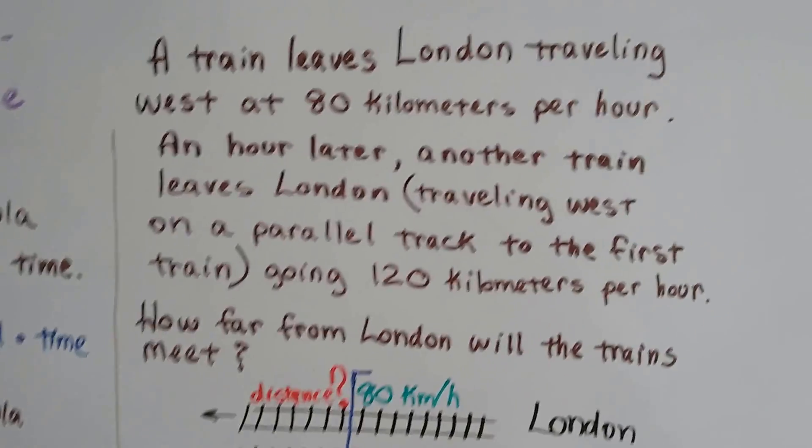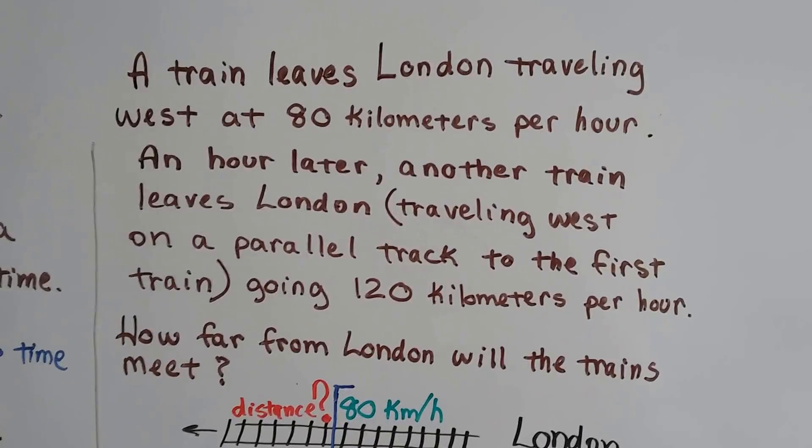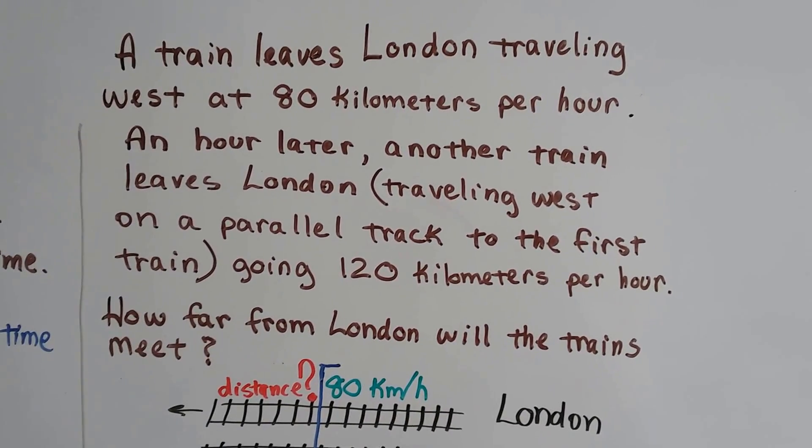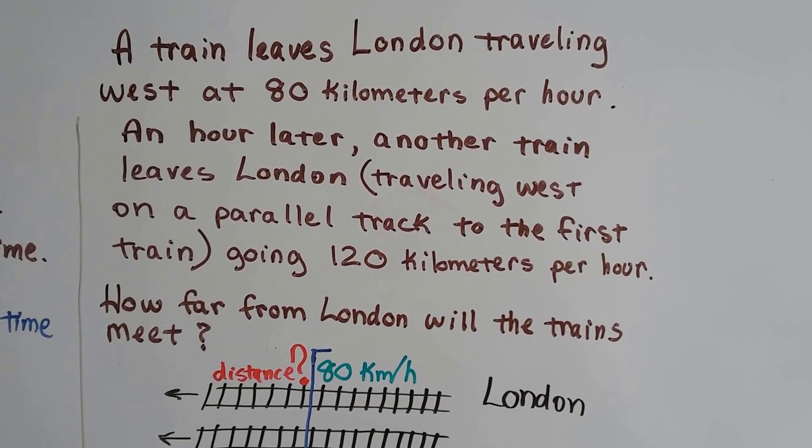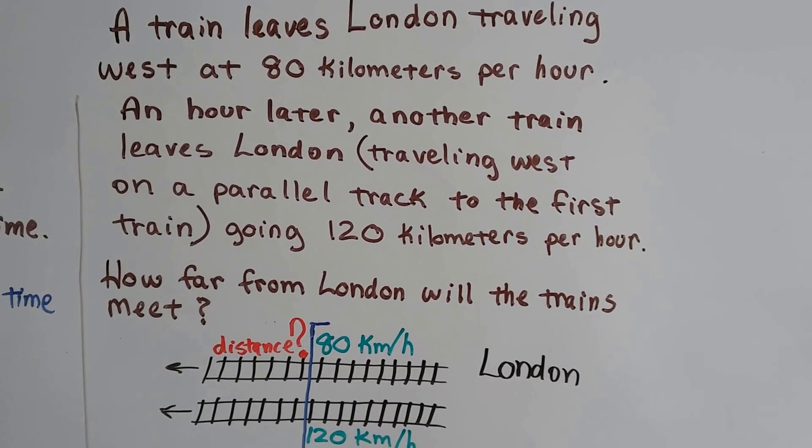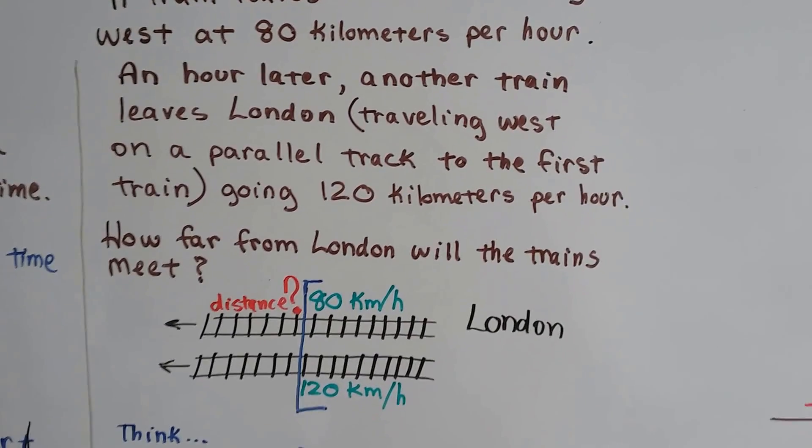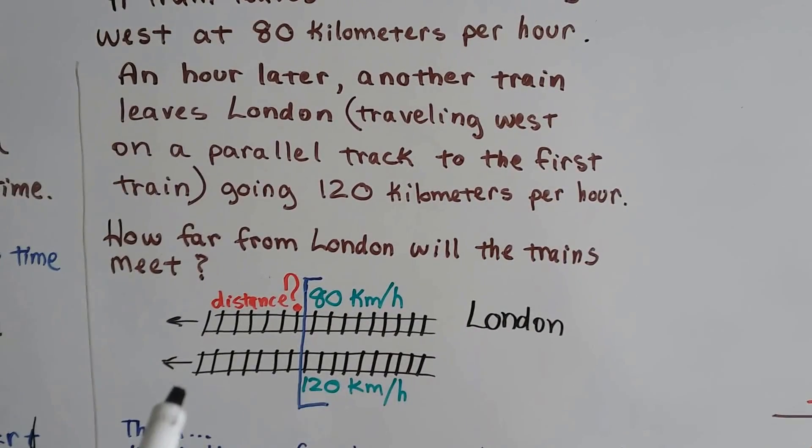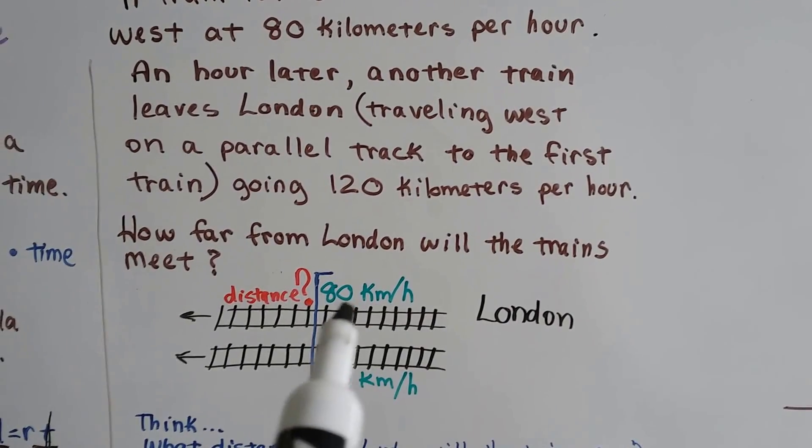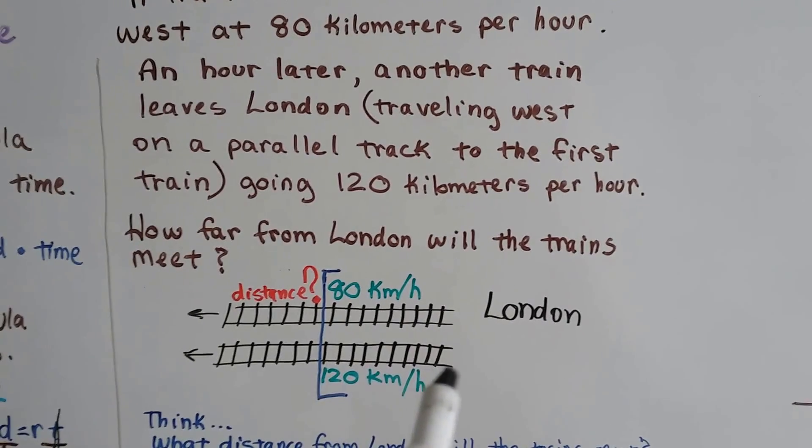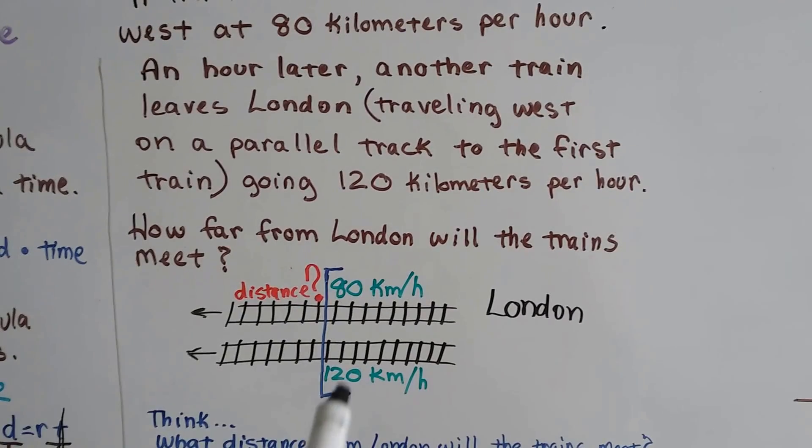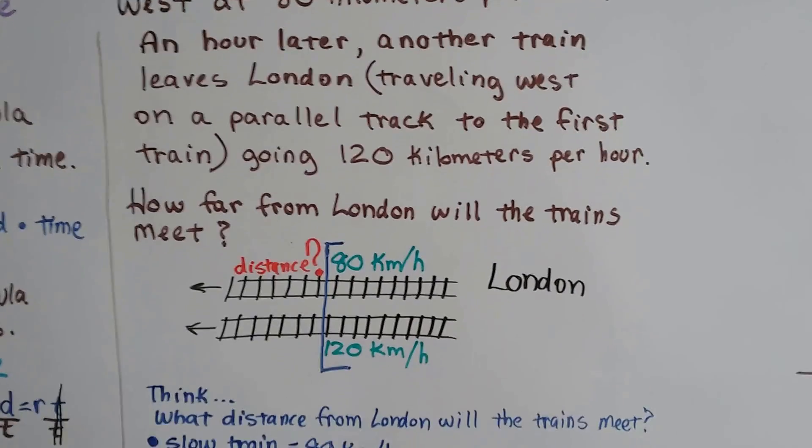A train leaves London traveling west at 80 kilometers per hour. An hour later, another train leaves London traveling west on a parallel track at 120 kilometers per hour. How far from London will the trains meet? I'm going to draw a picture. Here's London, here's the two parallel train tracks. A slower train is going 80 kilometers per hour, and a faster train is going 120 kilometers per hour.